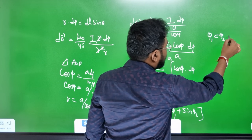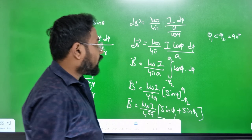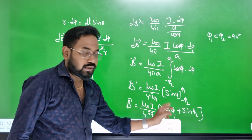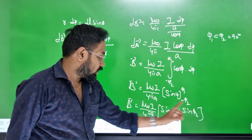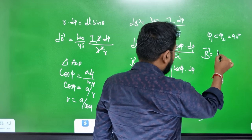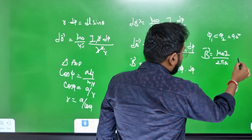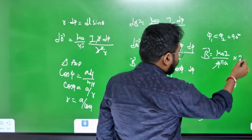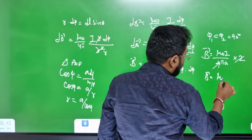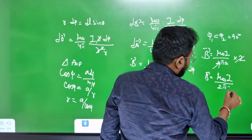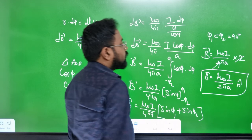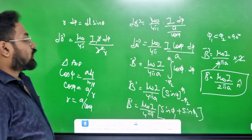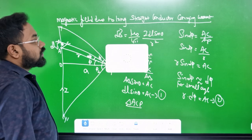For a full long conductor, φ₁ equals 90° and φ₂ equals 90°. Sin 90° equals 1, so 1 plus 1 equals 2. Therefore B vector equals μ₀I over 2πA times 2. The 4π and 2 cancel, giving B vector equals μ₀I divided by 2πA, times n-cap.